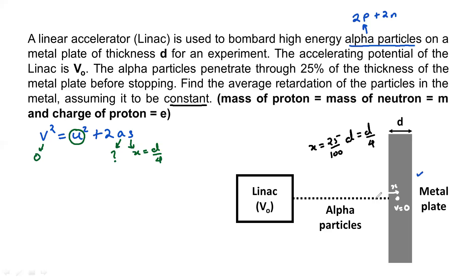u is the velocity of the particle when it hits the plate, which is also the velocity coming out of the linac. To find it, we use energy conservation: the energy supplied by the linac equals the kinetic energy of the alpha particle.